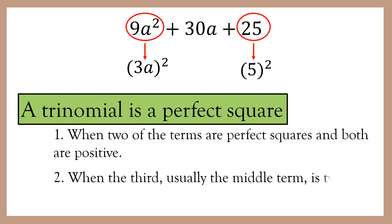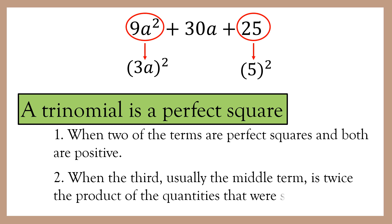Second, the middle term is twice the product of the quantities that were squared. The quantities that were squared are 3a and 5. Therefore, 30a should be twice the product of 3a and 5: 2 times 3a is 6a, times 5 is 30a. So 9a squared plus 30a plus 25 is a perfect square trinomial.